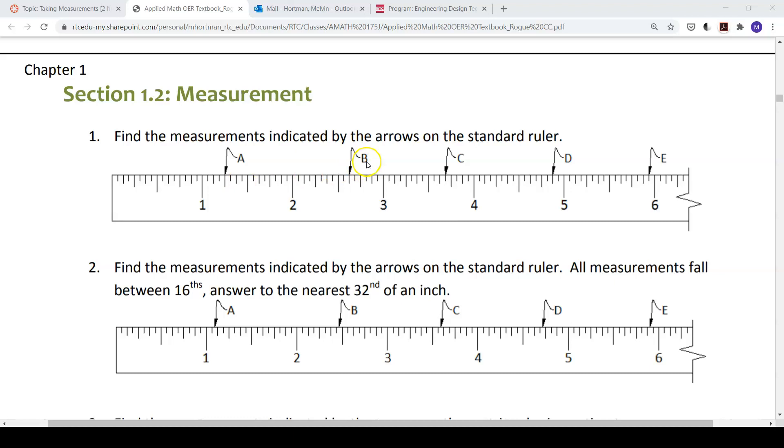Let's look at B. B is on the third largest increment. So to remind ourselves, let's count. 1, 2, 3, 4, 5, 6, 7, 8. So it's on eighth inch increments. Let's see which one it's on. So 1, 2, 3, 4, 5. So here we have 2 and 5 eighths.